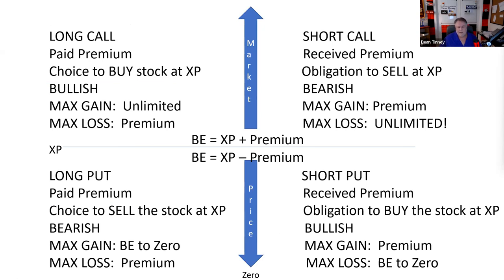Everybody does options a little differently. I don't know if this is the first time you've seen the options matrix. What I suggest you do — when you get in the exam site or when you're studying — take a sheet of paper and fold it in fours. In each quadrant, write what's going on. If you can just do the long call quadrant, you're going to be in pretty good shape. When you're long a call, you paid a premium, you have a choice to buy the stock, you're bullish, max gain is unlimited, max loss is the premium, and break-even is strike price plus premium. It is technically correct.